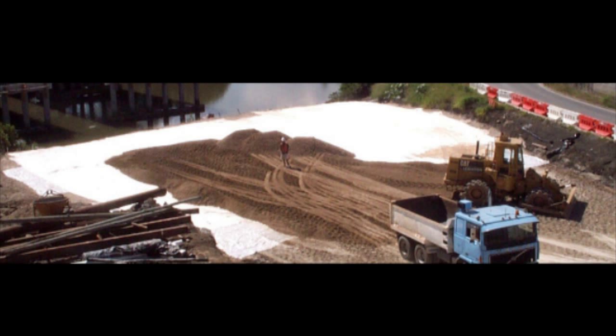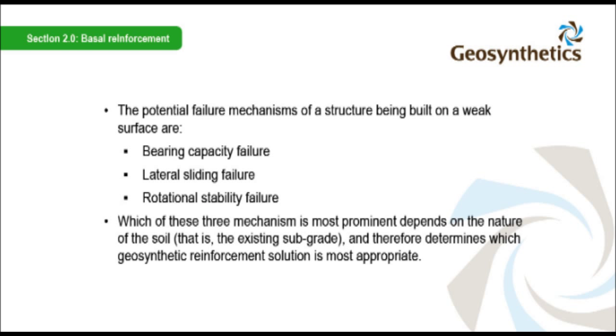The construction sequence is carefully managed. The dump truck has delivered the soil, and the excavator will spread it over the geosynthetic — neither vehicle will ever drive on the reinforcing product itself. The potential failure mechanisms of a structure being built on a weak surface are: bearing capacity failure, lateral sliding failure, and rotational stability failure. Which of these three mechanisms is most prominent depends on the nature of the soil — that is, the existing subgrade — and therefore determines which geosynthetic reinforcement solution is most appropriate.